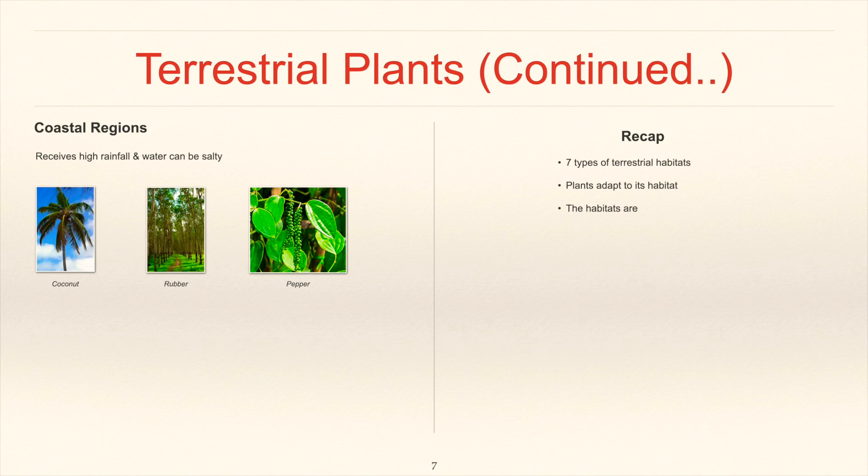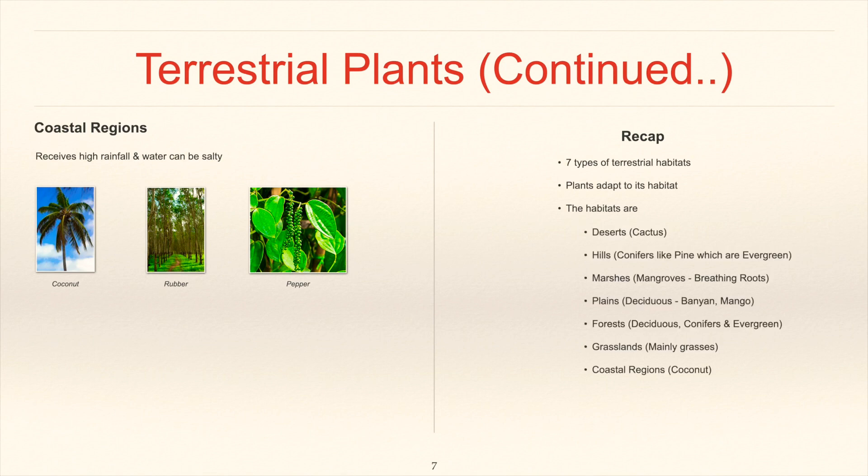Now let's recap the previous slides. There are seven types of terrestrial habitats. Plants adapt to its habitat. These habitats are deserts which are home to cactus. Hills which are home to conifers like pine which are evergreen. Marshes that are home to mangroves that has a breathing root. Plains which are home to the deciduous plants like bunyan and mangoes. Forests which are home to deciduous, conifers and evergreen trees or plants. Grasslands where you can mainly find less trees and more grasses. Coastal regions which are home to coconut.